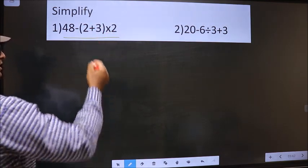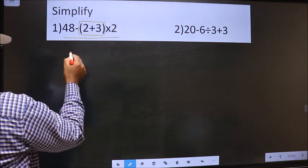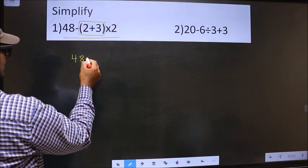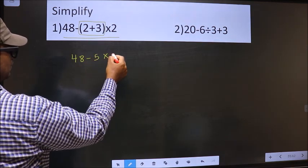As per rule, we should calculate the brackets first. So we get 48 minus 2 plus 3 is 5 into 2.